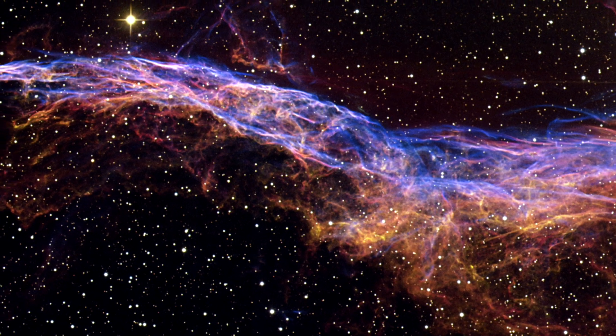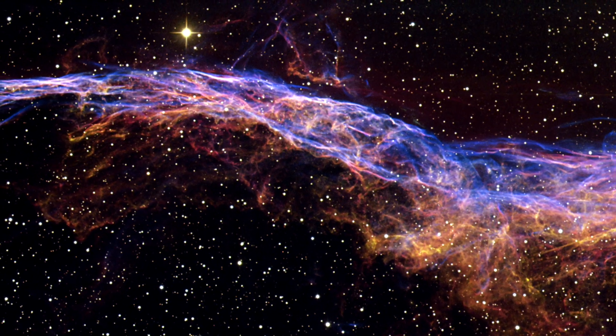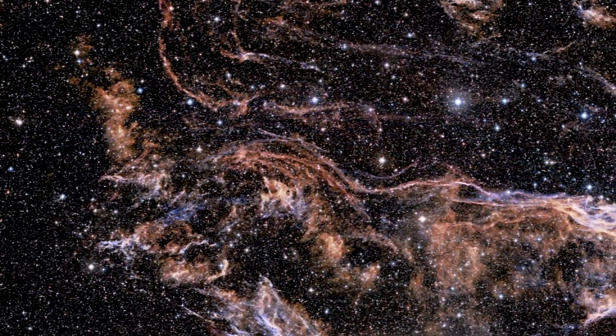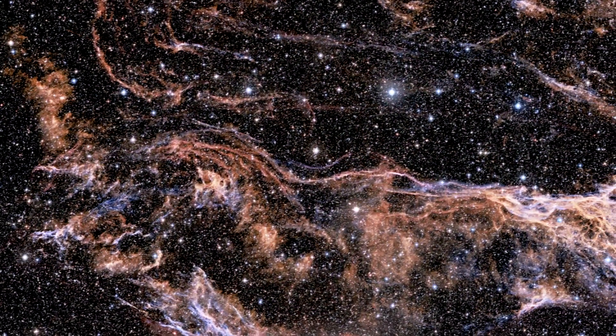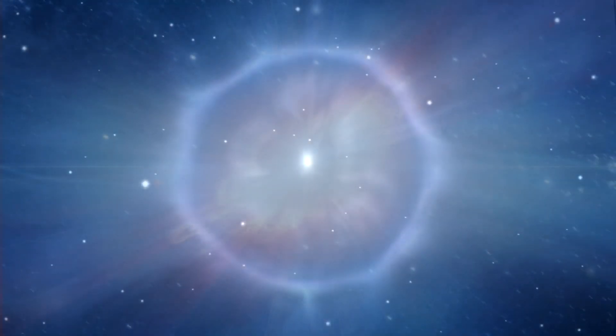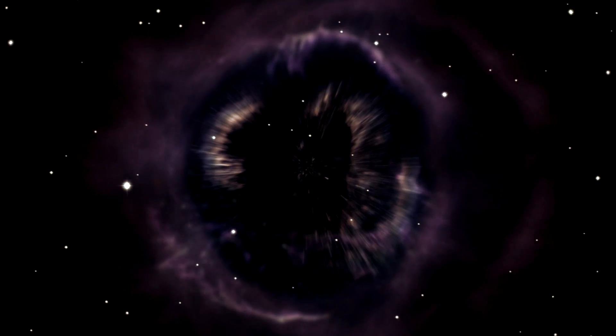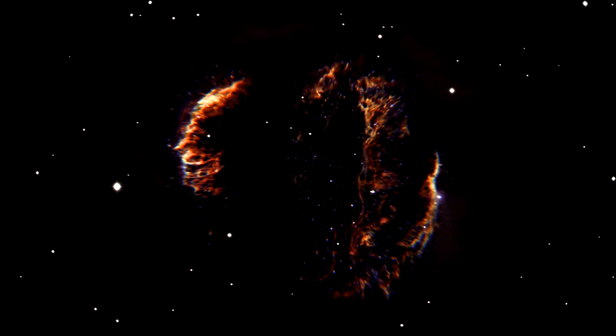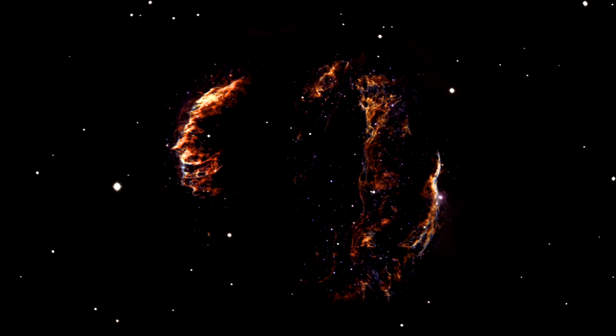The intertwined rope-like filaments of gas in the Veil Nebula result from the enormous energy released as the fast-moving debris from the supernova explosion plows into the surroundings and creates a shock front. This shock, driven by debris moving at 600,000 kilometers per hour, heats the gas to millions of degrees. It is the subsequent cooling of this material that produces the brilliantly colored glows.